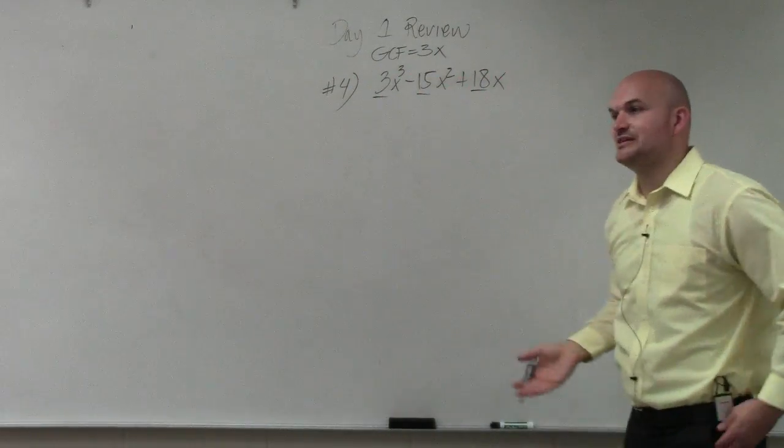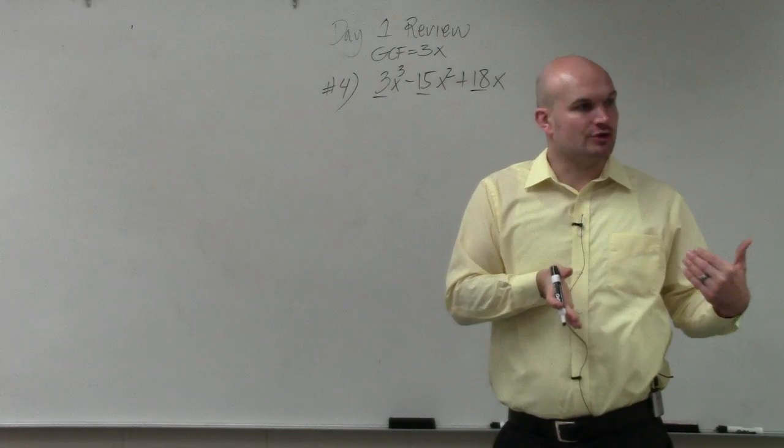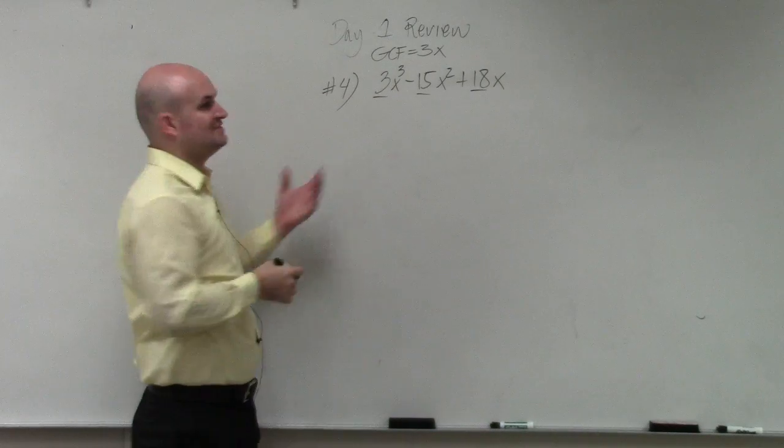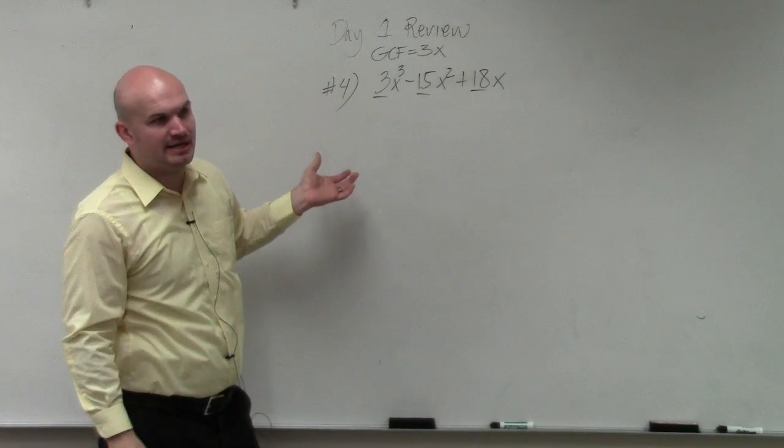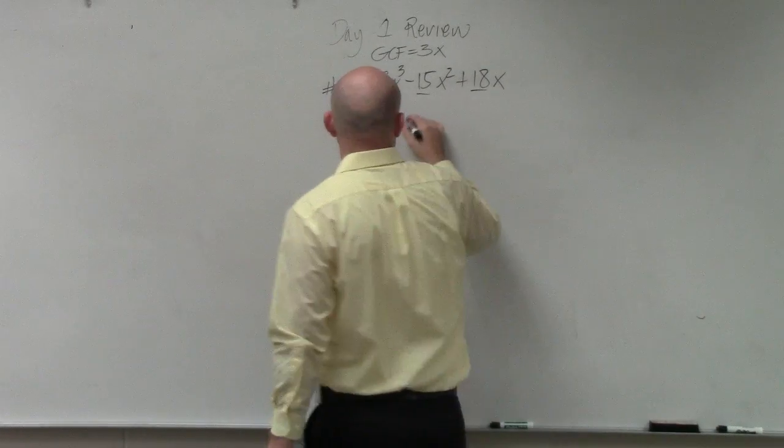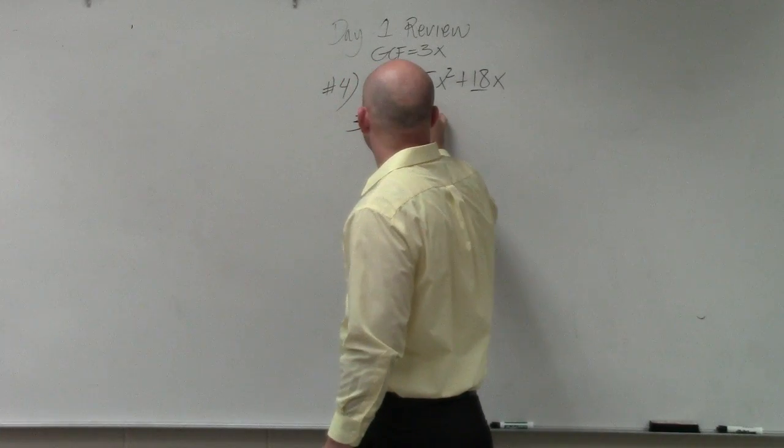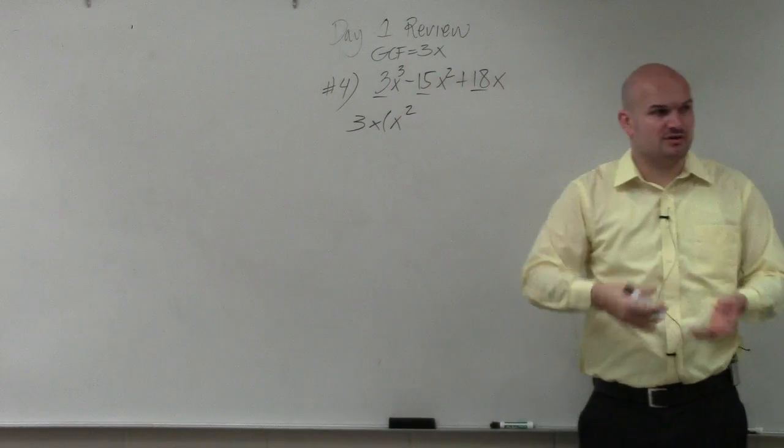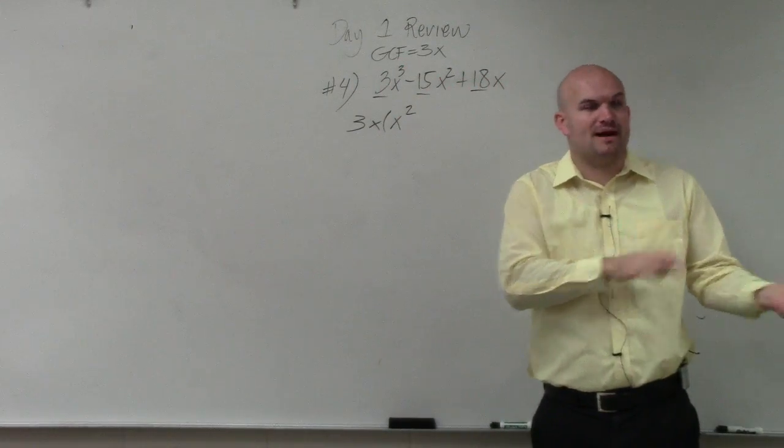Remember, factoring is basically dividing out your greatest common factor. If I divide out 3x from 3x cubed, then I'm just going to be left with x squared. And you can always check your answer. If you divide something out, you can always go back and multiply it.